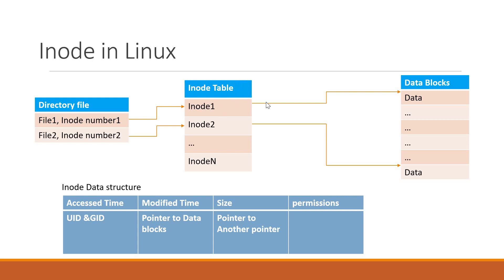The INODE table will contain all the INODE entries of all the files and directories in the file system. Each INODE entry represents this kind of data structure. When we try to access a file, first Linux will read the directory file and identify the name of the file, fetch the corresponding INODE number, and read the INODE table. Using this INODE information, it will fetch all the metadata as well as the actual data by using the pointer address. This way we can read a file in a file system, and write operations are performed in the same way.